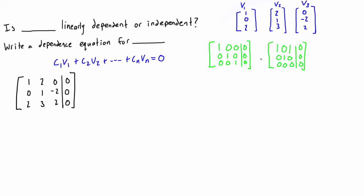For a three-by-three matrix — though this works for vectors in any number of dimensions — if you get a staircase of ones with zeros everywhere else, that indicates the set is linearly independent because there's a unique solution. But if you get a free variable — a number to the right or left of a leading entry — then that variable makes all other variables depend on it, meaning the vectors are linearly dependent.